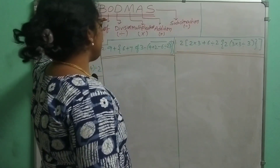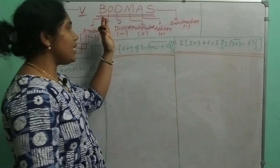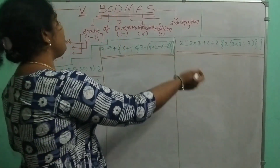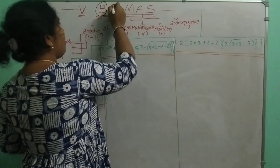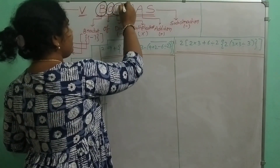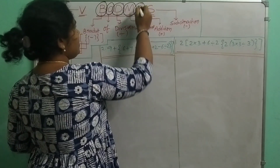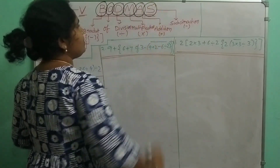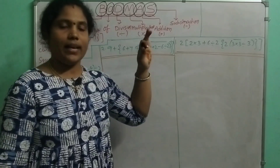The topic is BODMAS. B means Bracket, O means Of, D means Division, M means Multiplication, A means Addition, S means Subtraction.